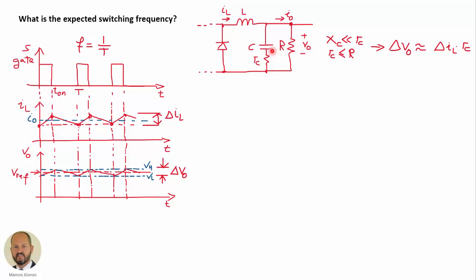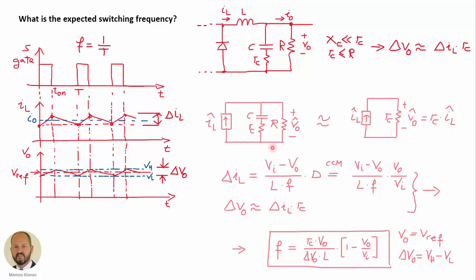If we use a ceramic capacitor with a very low series resistance and want to use this control method, we will need to add a small series resistance to generate the necessary ripple. With this equivalent circuit, we can calculate the output ripple, which equals RC — the series resistance of the capacitor — times the ripple of the current.